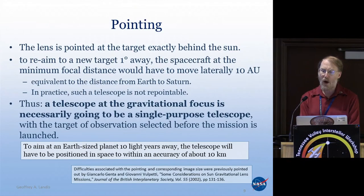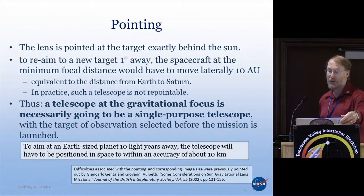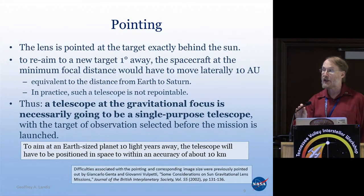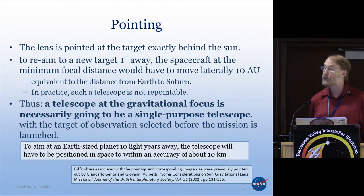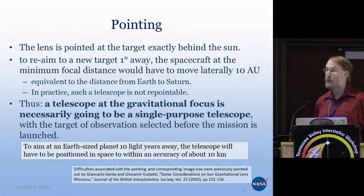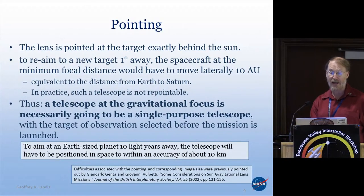The lens is pointed at a target exactly on the far side of the sun. So if you want to re-aim at a different target, say one degree away, you have to move one degree, which at 550 AU or further, is a long distance. To get one degree of pointing of your telescope, you'd have to move ten astronomical units — the distance to Saturn. What this means is essentially the telescope is not repointable. You pick your target before you launch, and you are then set on that target. It is a single purpose telescope.